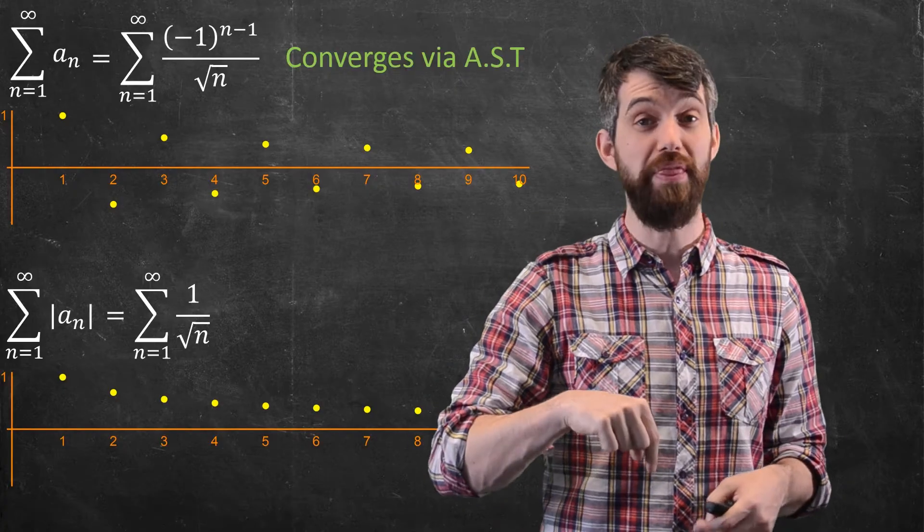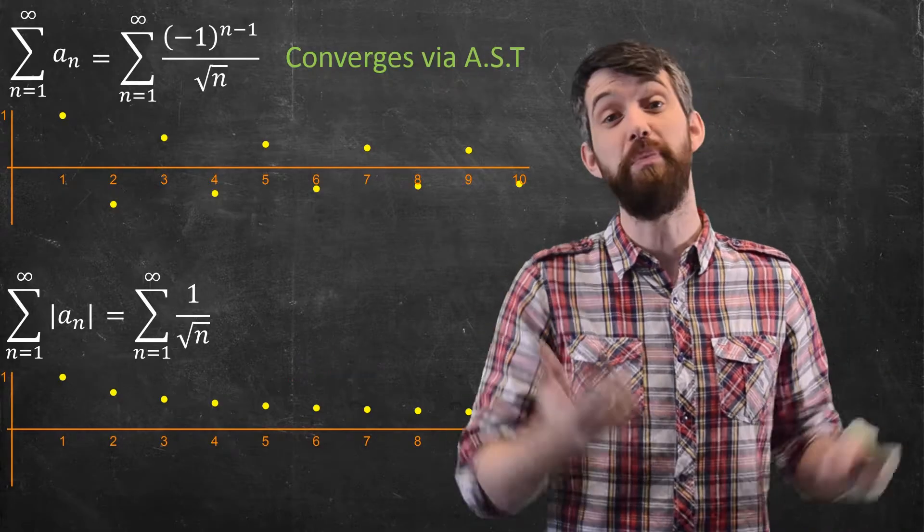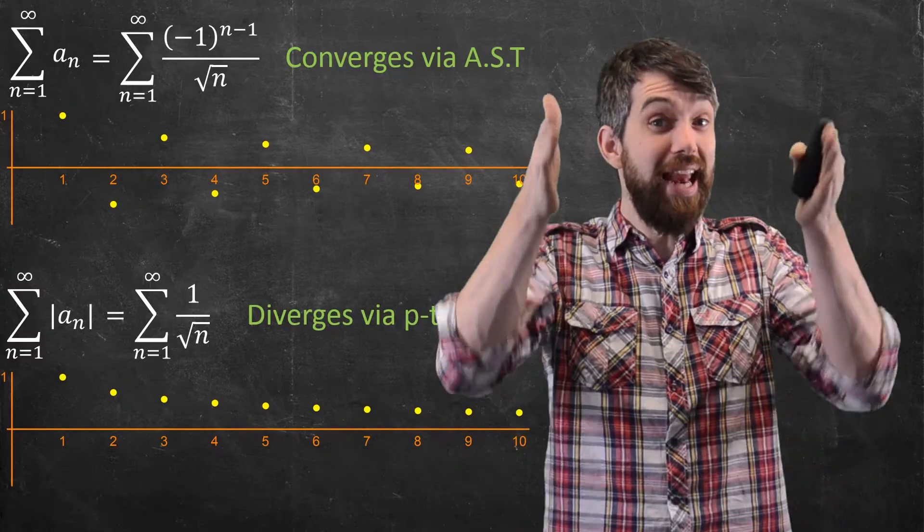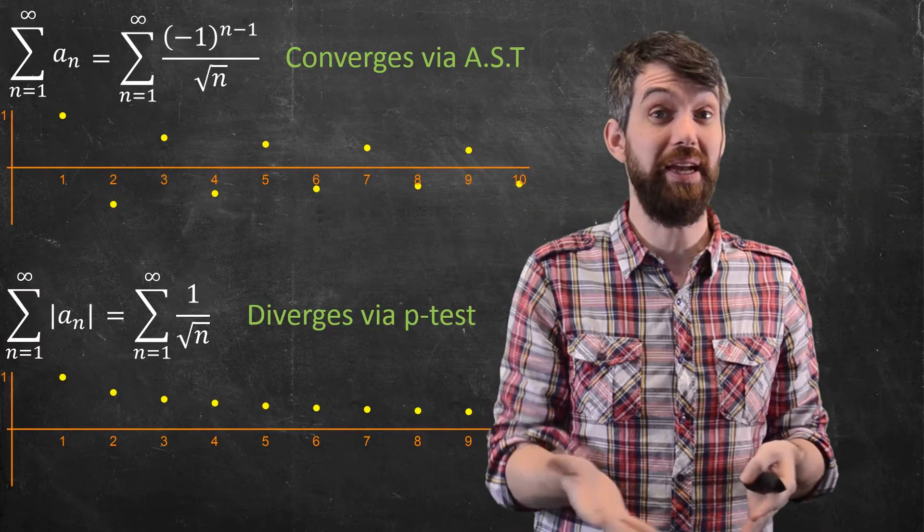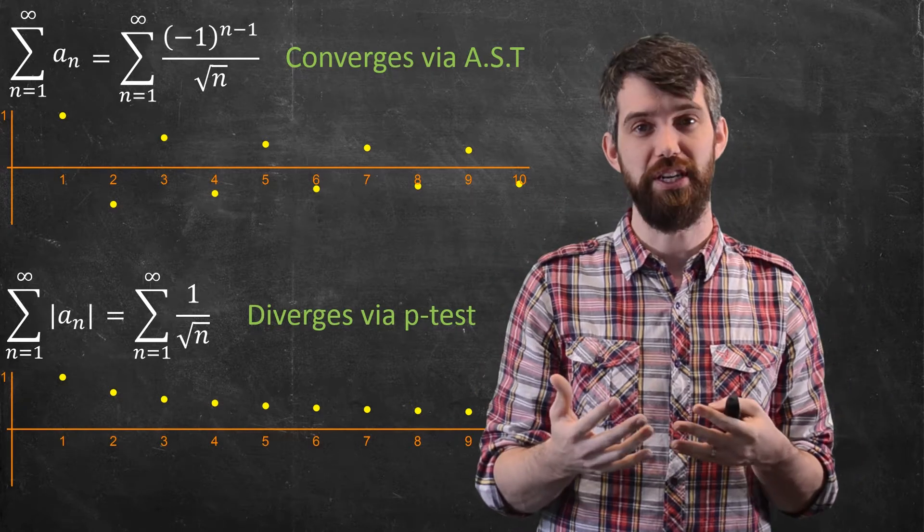As for the bottom one, this is a p-test. It's a p with n equal to one half. And so this is a p-series that diverges. So the lesson here is that taking absolute values of the terms makes a big deal. In this example, it converts it from a convergent to a divergent series.